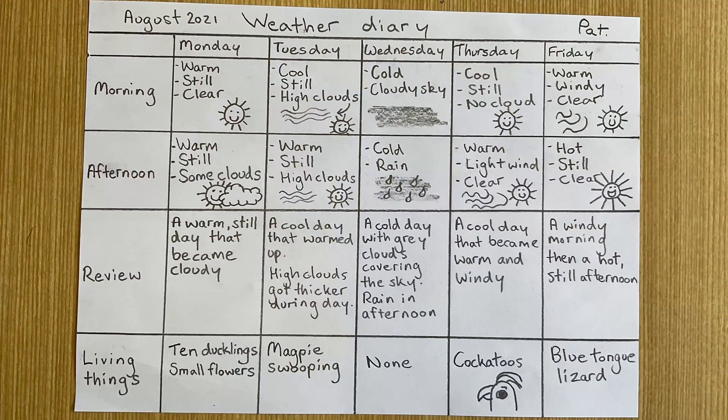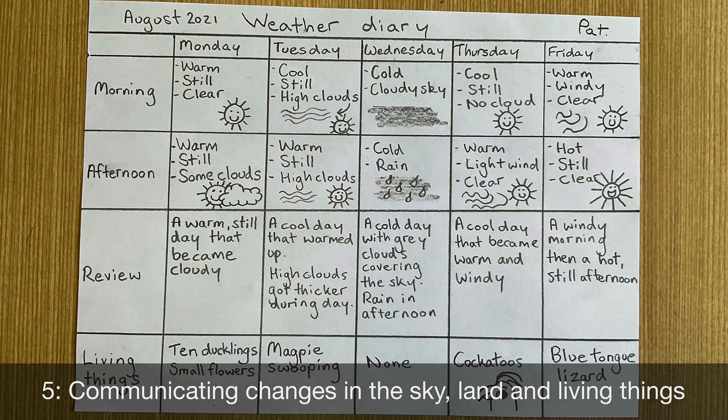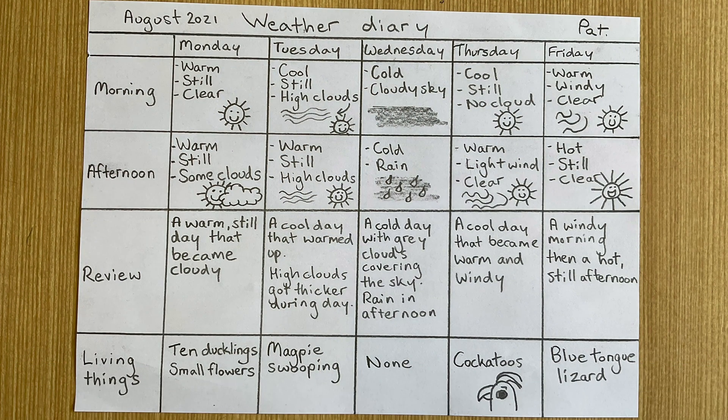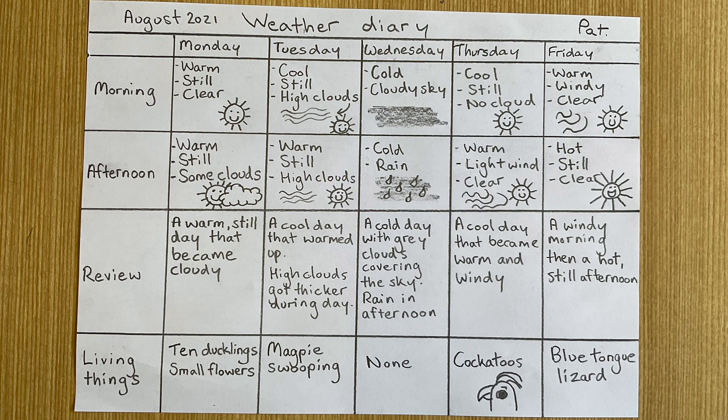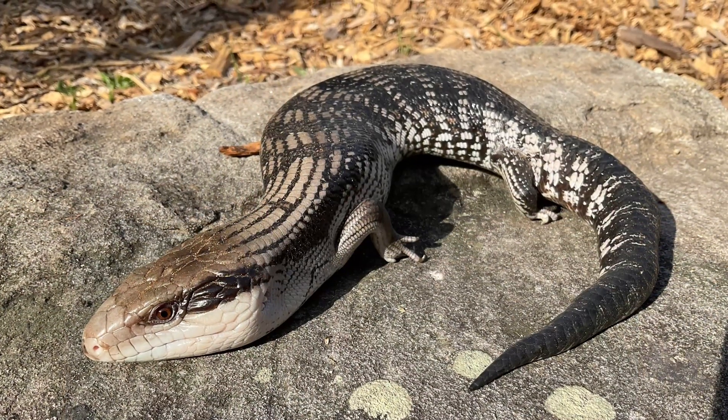Hello again. It's the end of the week and your weather diary should be full — mine is. Let me show it to you. Monday was warm and lovely. Tuesday started getting cloudy. Wednesday was cold and then it rained. Thursday the rain had stopped and then it got very windy. Friday was windy early, but then it got very hot. I saw birds almost every day and a big blue-tongued lizard came out on the hot afternoon.